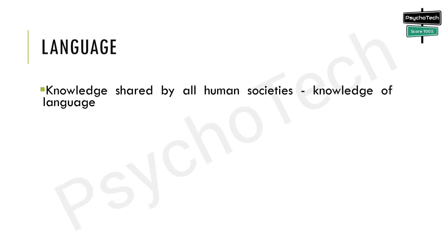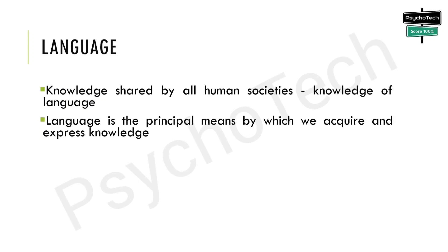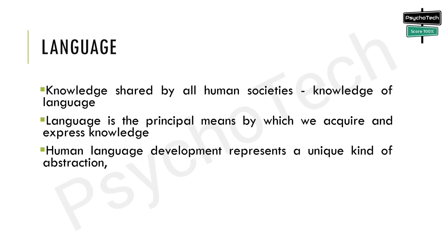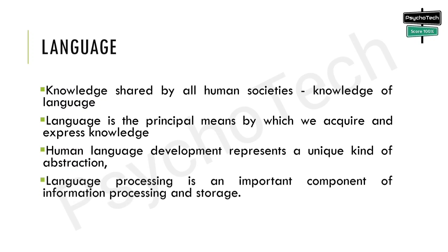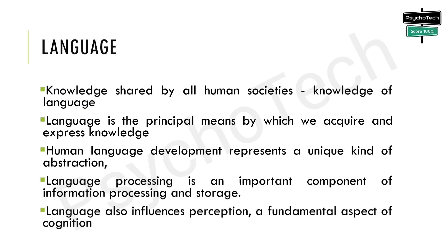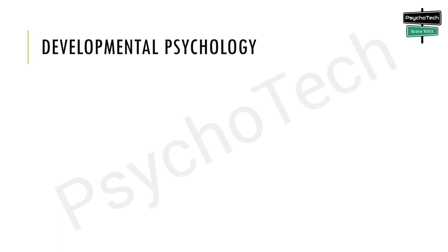Now we will talk about language. One form of knowledge shared by all human societies is the knowledge of language. Language is the principal means by which we acquire and express knowledge, and the study of how language is used is a central concern of cognitive psychology. Human language development represents a unique kind of abstraction that is basic to cognition. Language processing is an important component of information processing and storage, and language also influences perception — a fundamental aspect of cognition.